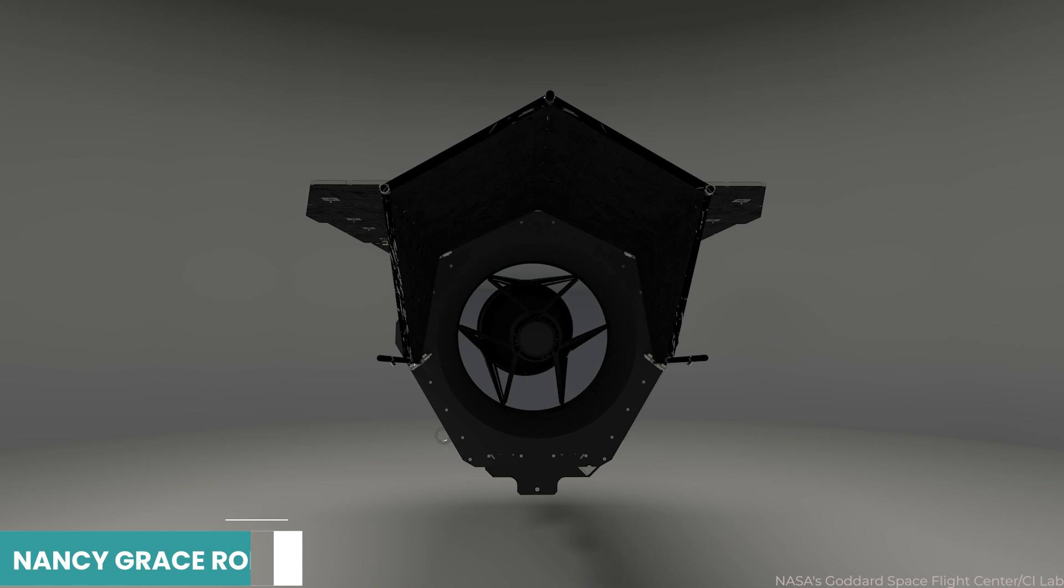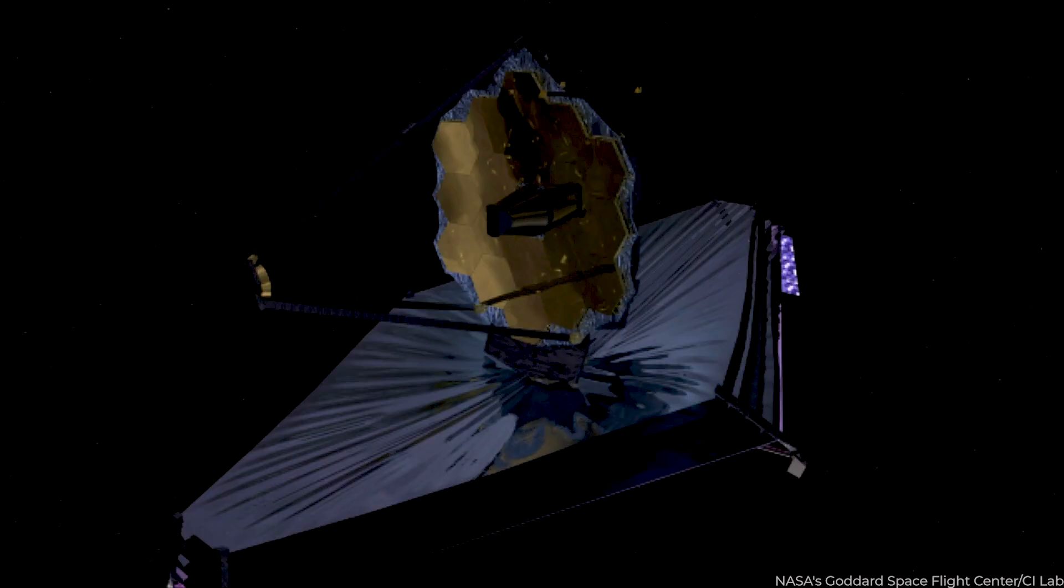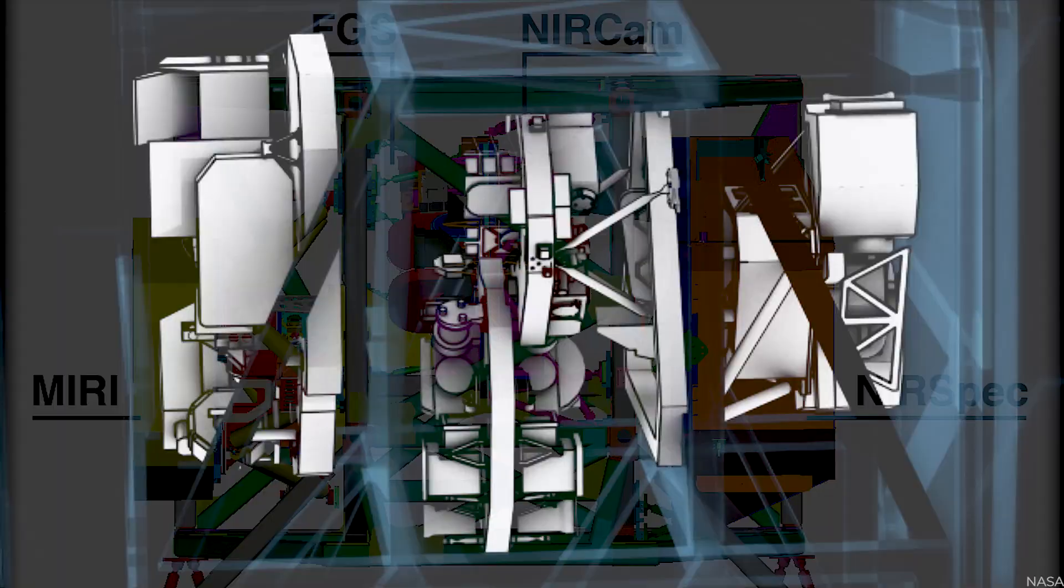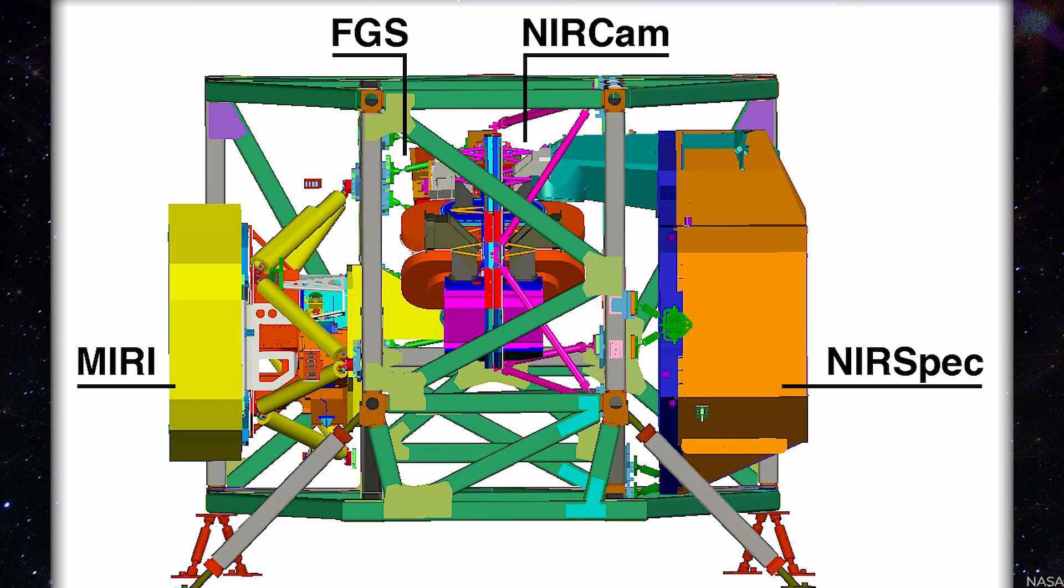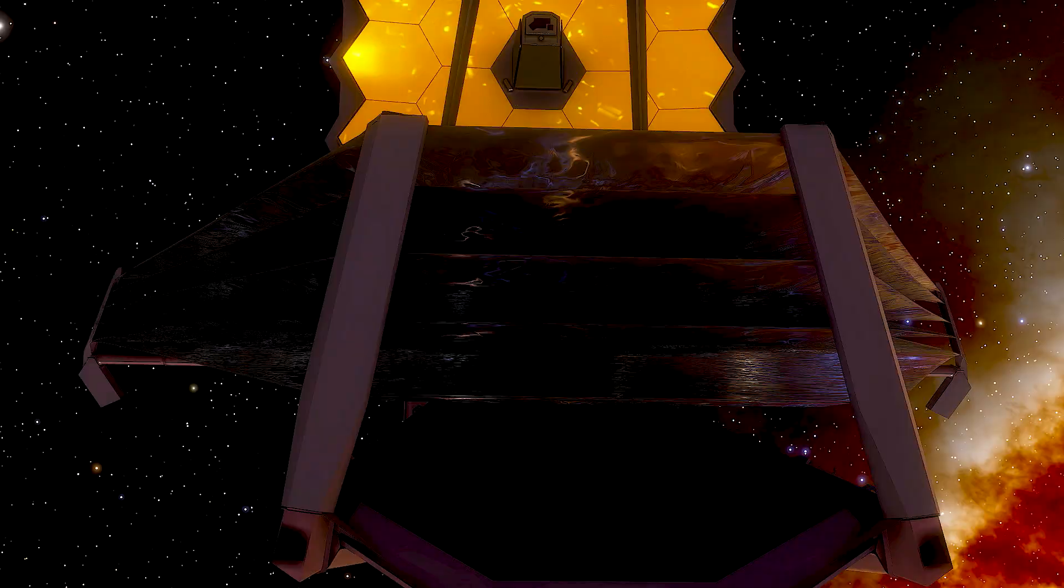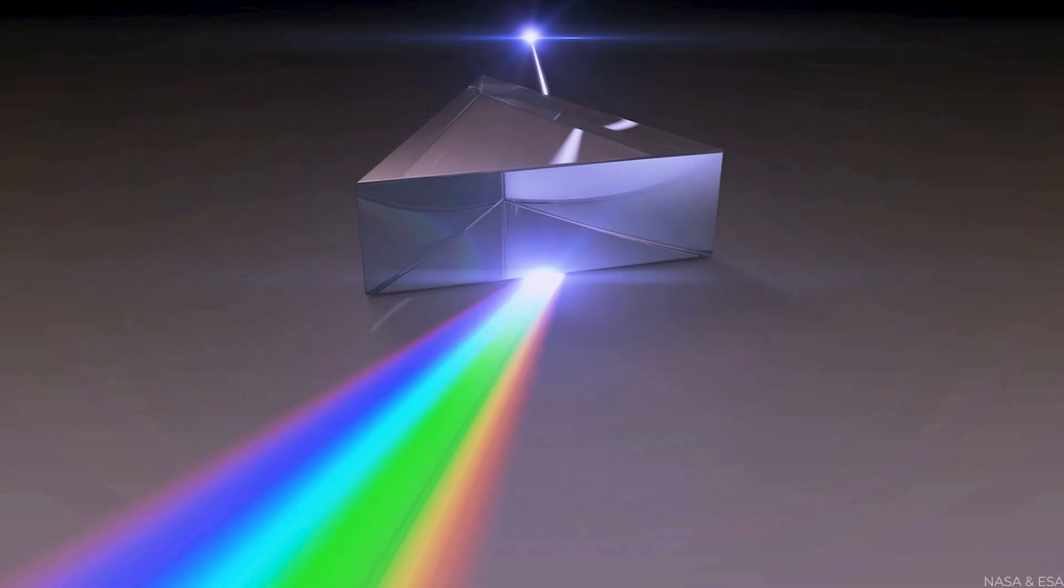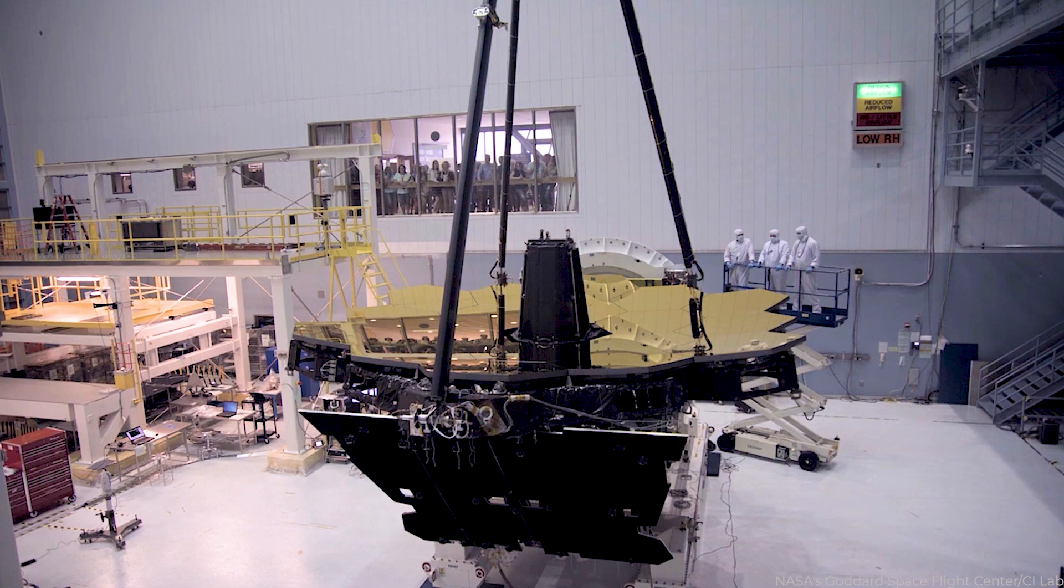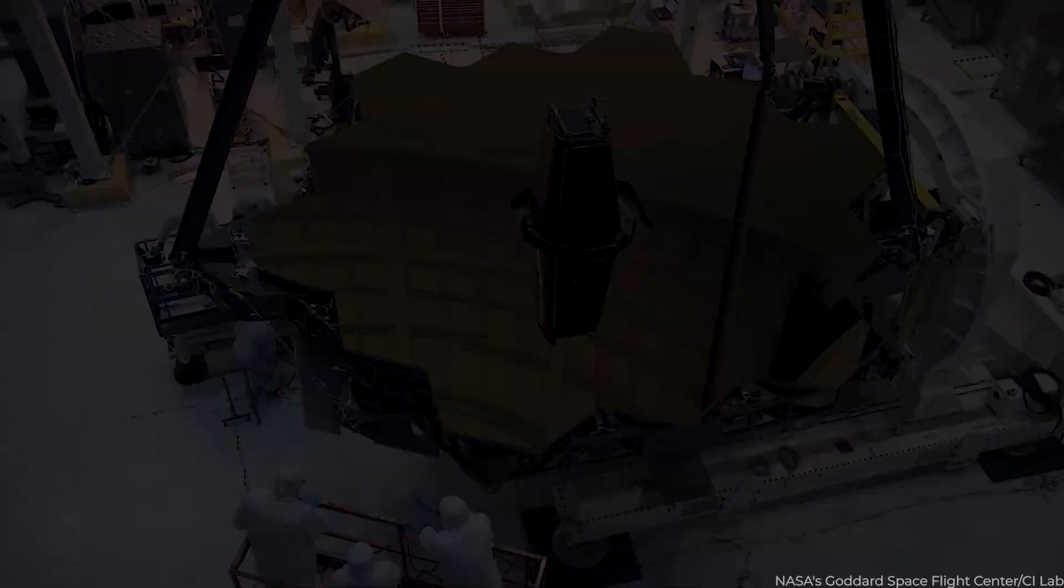The James Webb Space Telescope has four primary scientific instruments: the NIRCAM, the NIRSPEC, MIRI, and the FGS-NIRISS. These devices allow for various observations, including imaging, spectroscopy, and coronography. The JWST is the most prominent space telescope ever constructed, with a primary mirror that is 21.3 feet in diameter, over three times that of Hubble.